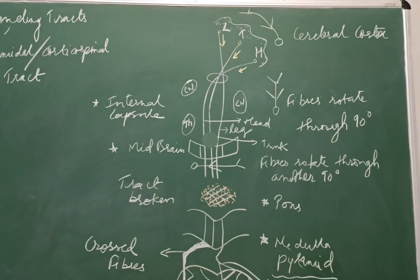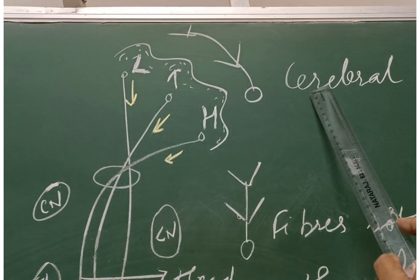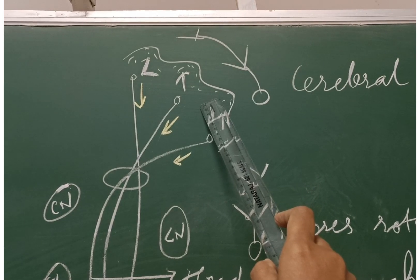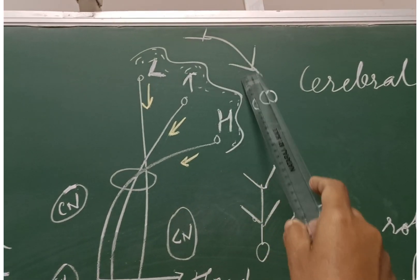This is the overall diagram you can see here. Now let's begin. 25% of the fibers of the pyramidal tract begin from the motor area 4 and 6, and remaining 75% are derived from parietal, temporal, and occipital lobe areas 1, 2, 3, 5, and 7.